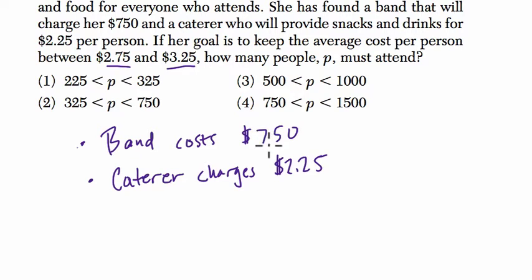So the average cost per person is going to go down the more people that attend. So that means to me, if I look at these choices right here, to get the lowest cost possible, for example $2.75, I'm going to want to try the biggest extreme here, which is 1,500, and see what happens if that works.